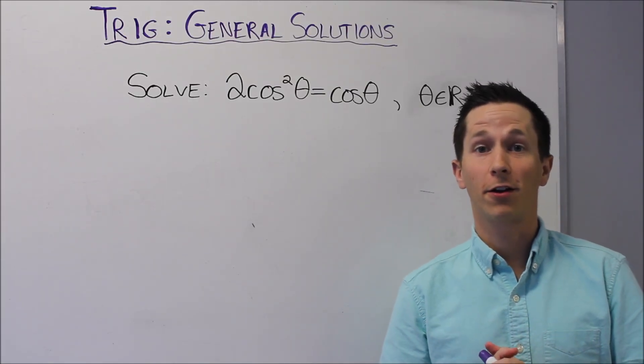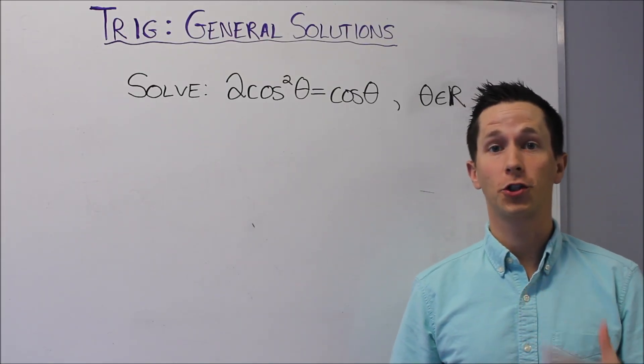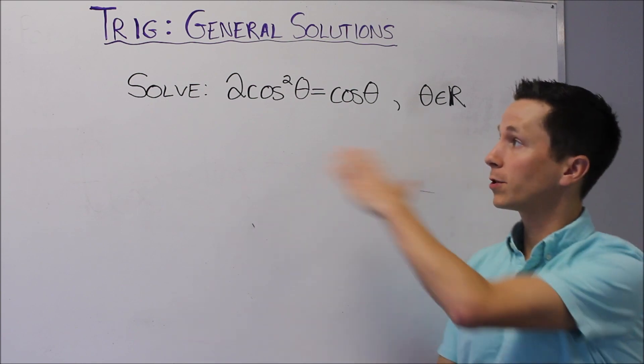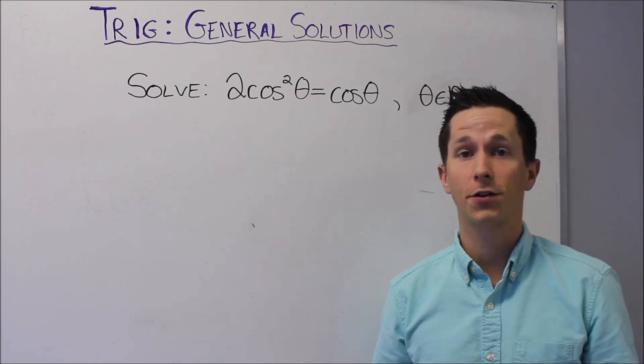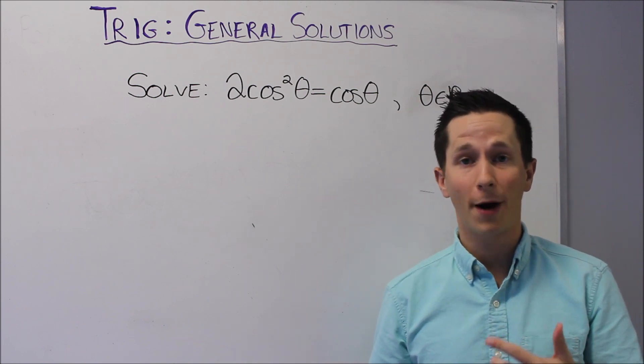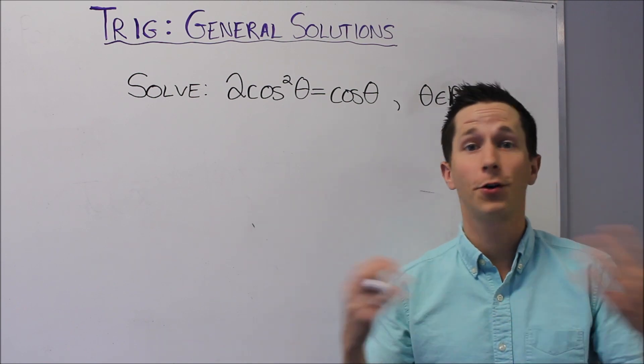In this video, we're going to take a look at general solutions for trig equations. Usually when we're asked to solve a trig equation, the angle is defined on a certain interval. So maybe from 0 to 2π, or negative π to π, or 0 to 360.